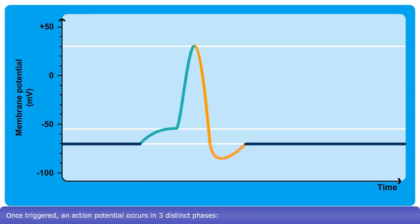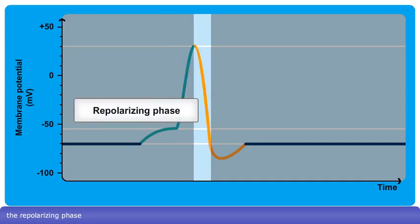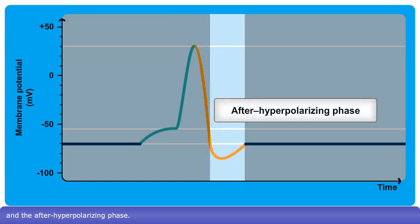Once triggered, an action potential occurs in three distinct phases: the depolarizing phase, the repolarizing phase, and the after-hyperpolarizing phase.